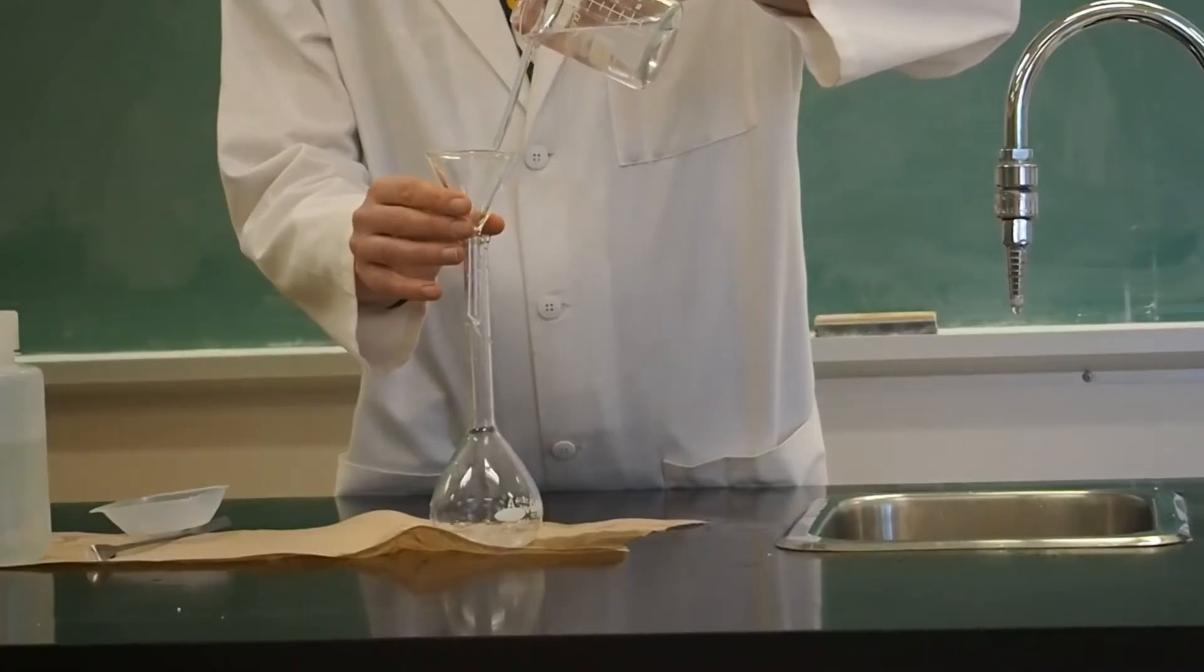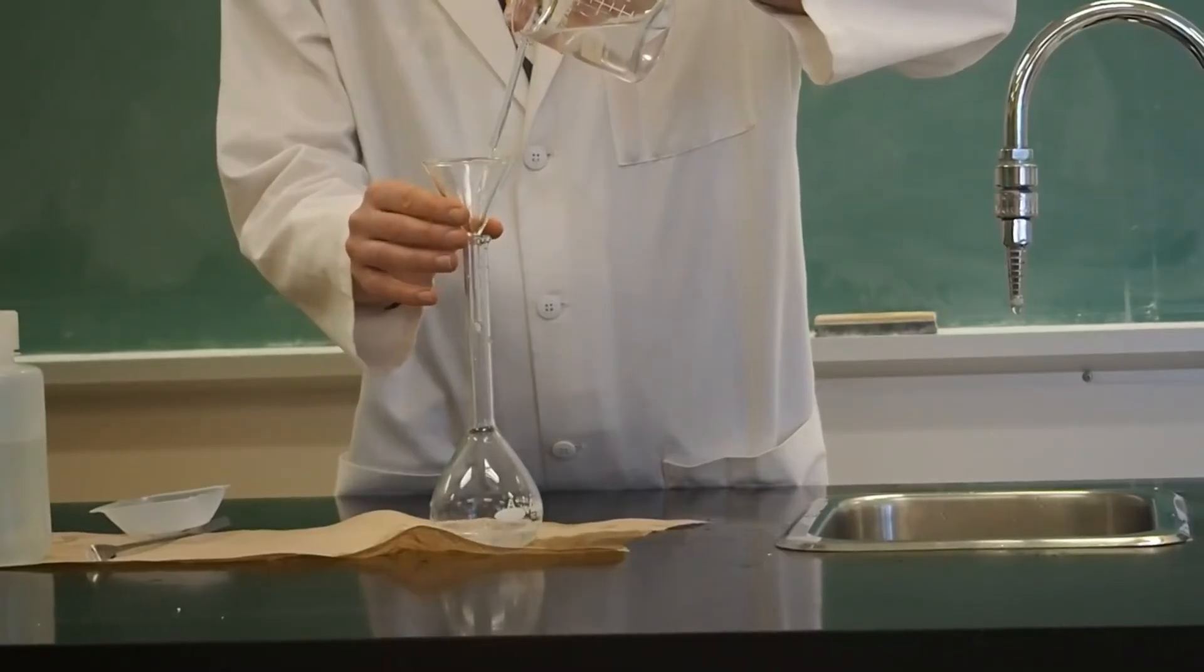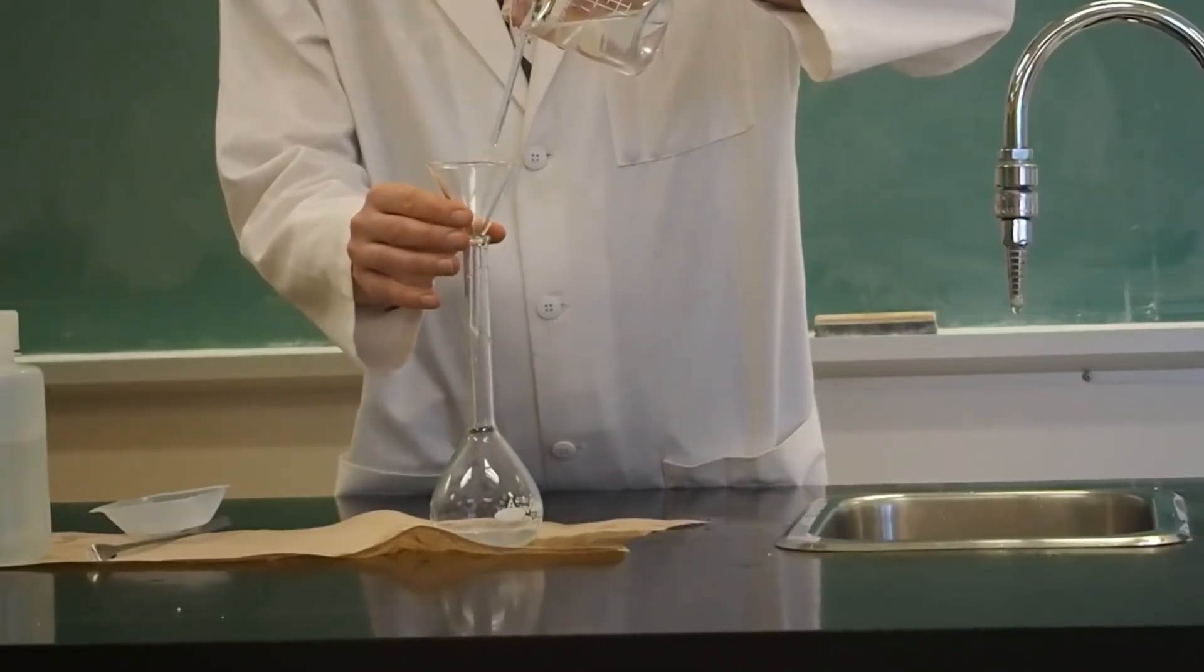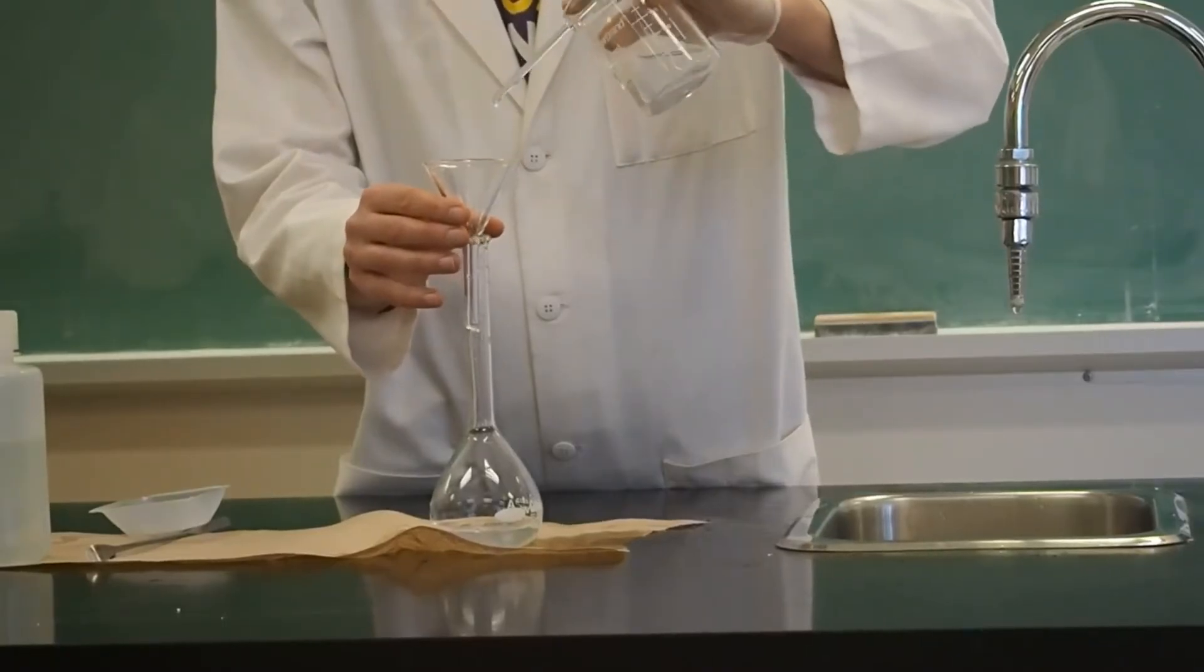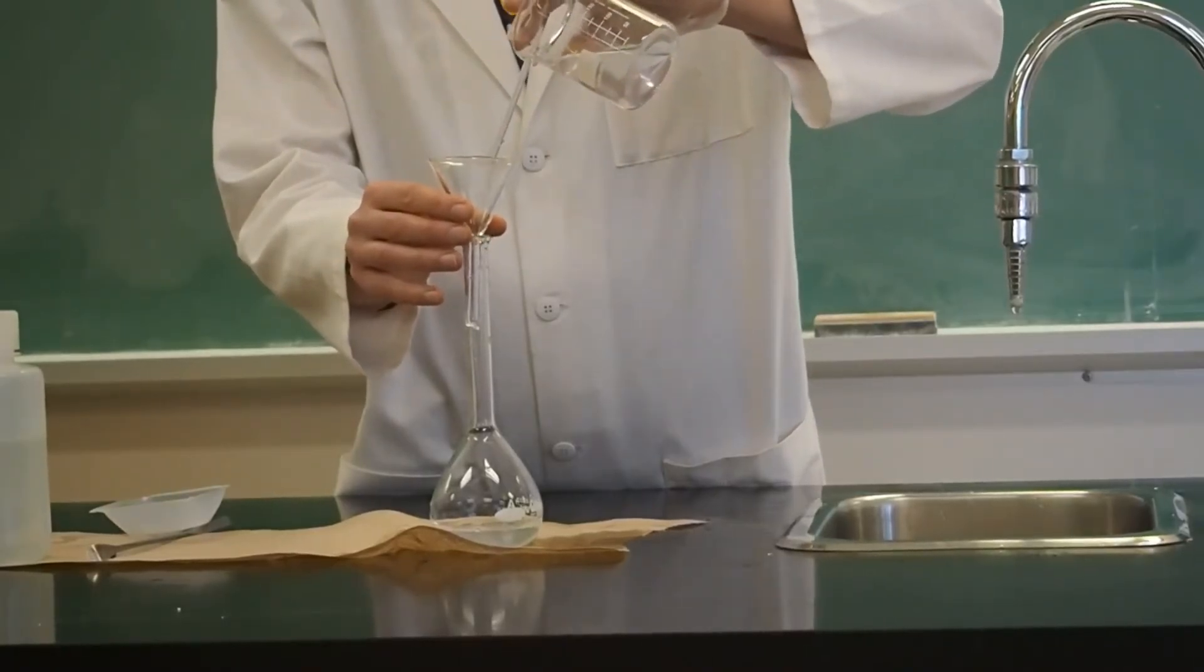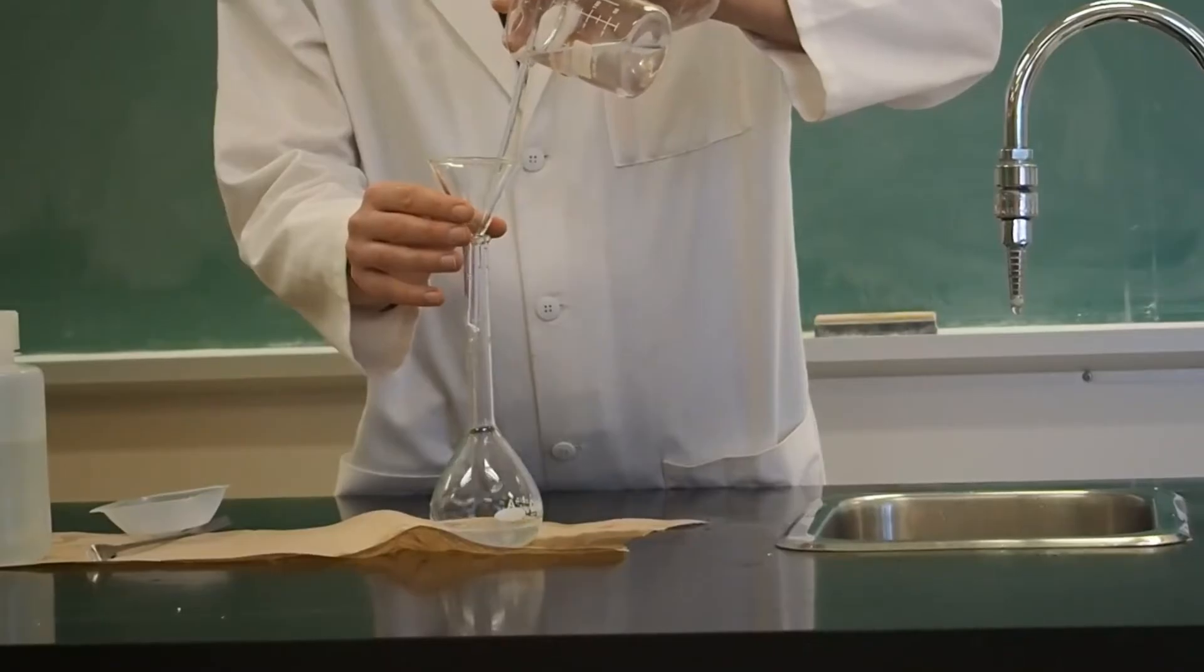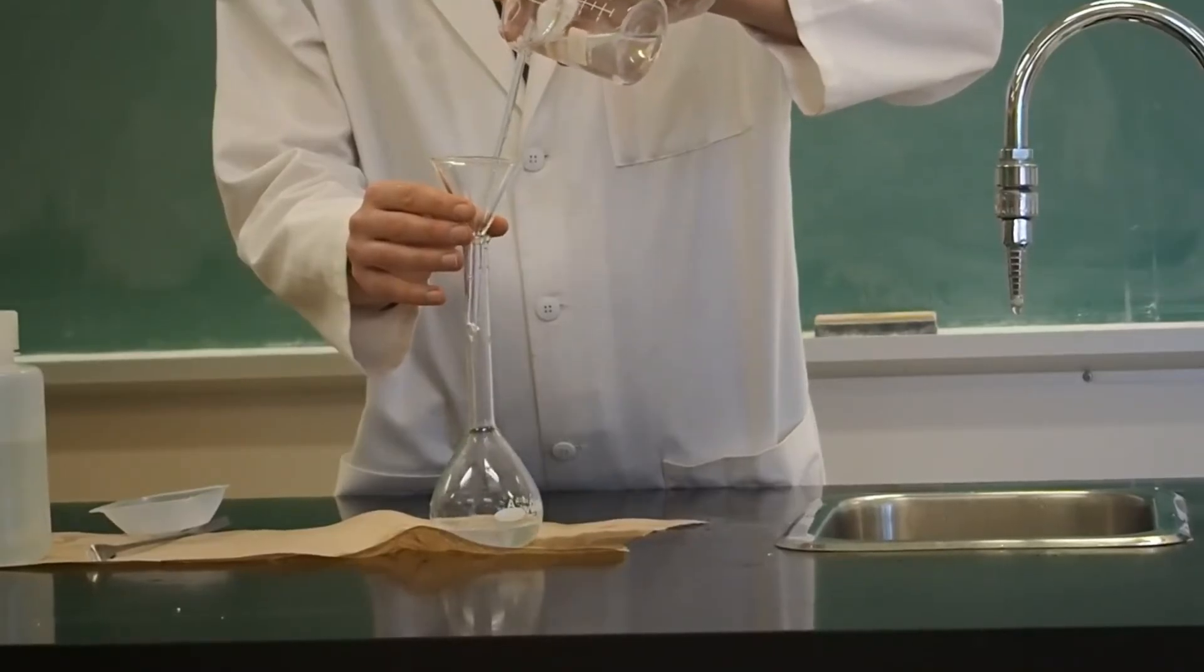Decant the solution into the volumetric flask by pouring slowly. The glass stir rod will allow a stream to form and prevent splashing. Be careful not to allow any undissolved solute into the volumetric flask.